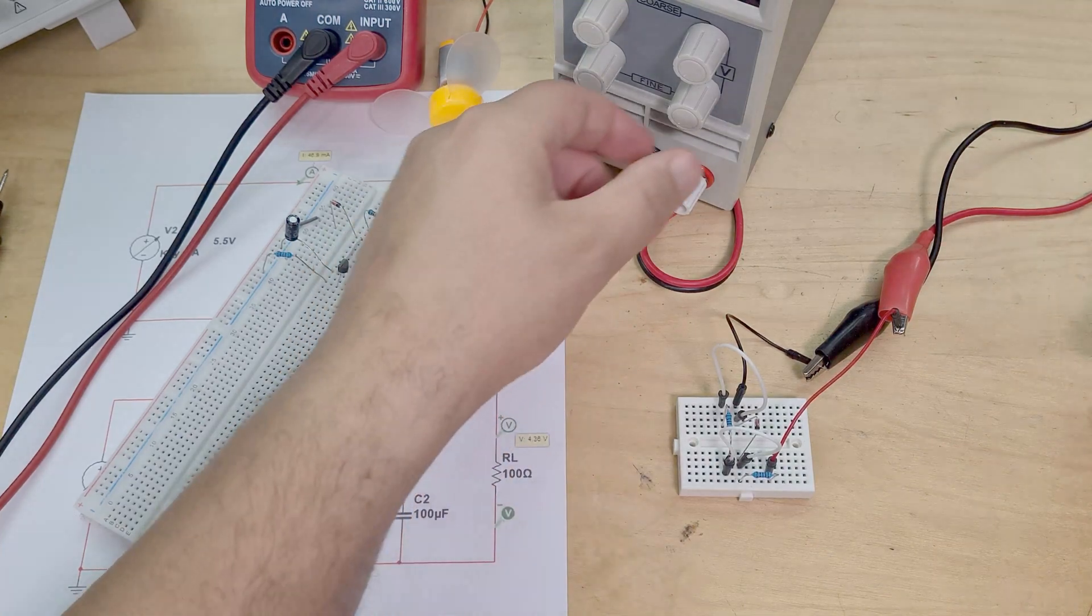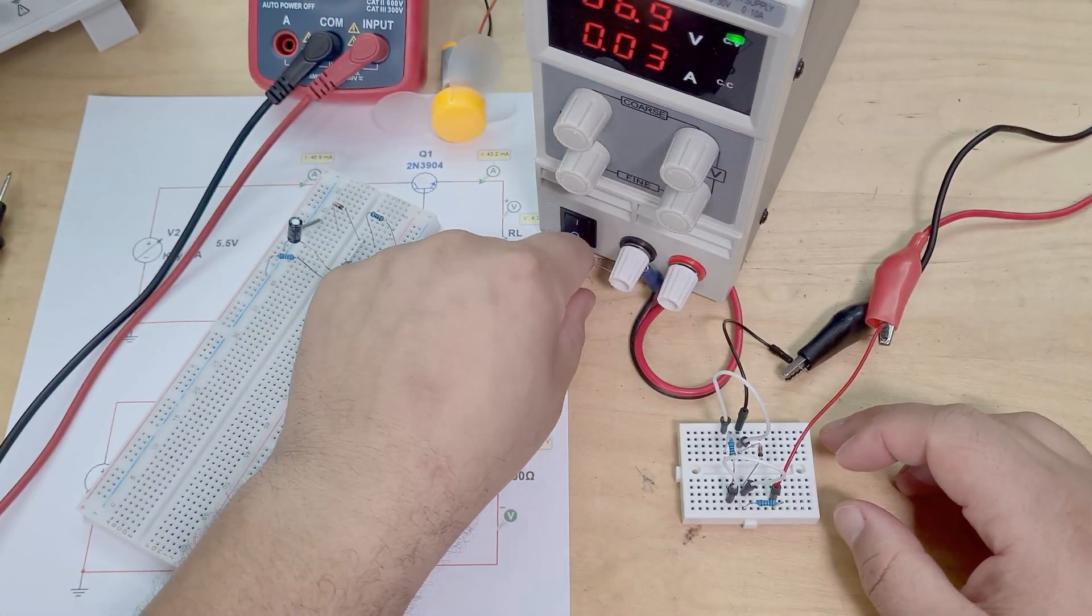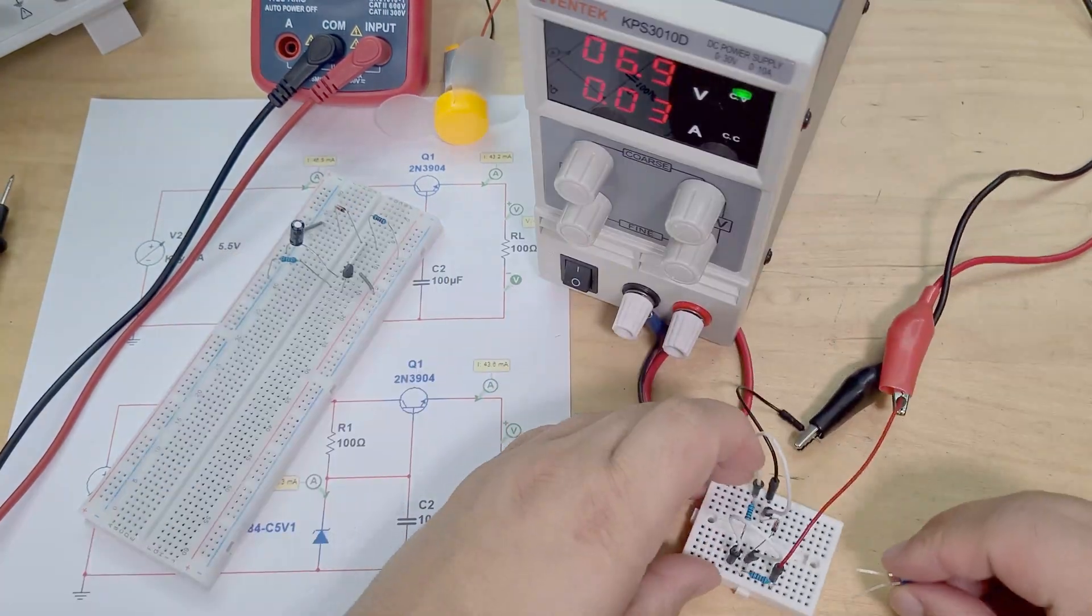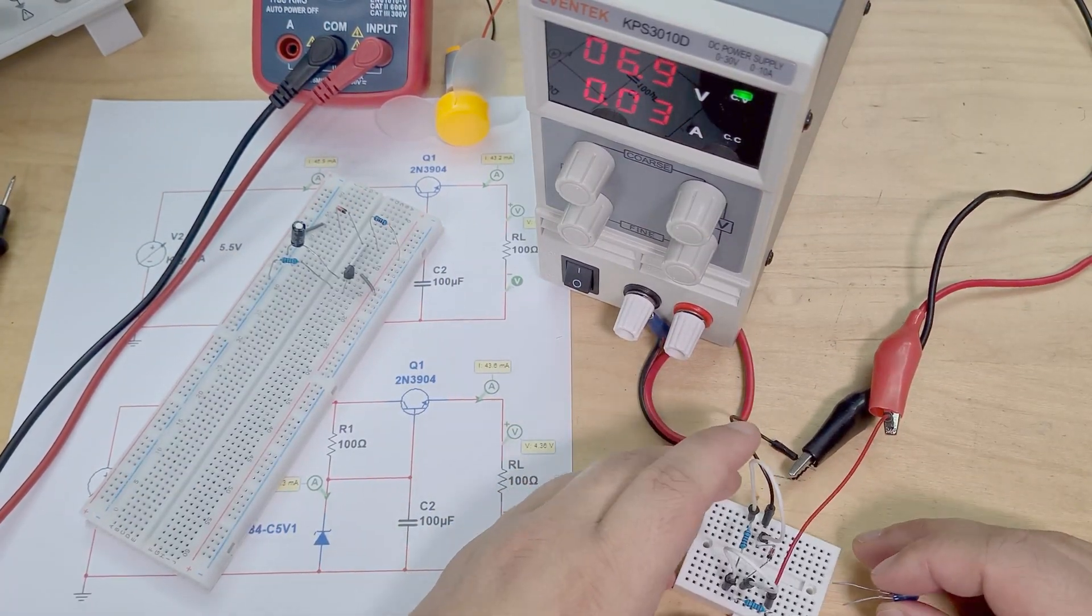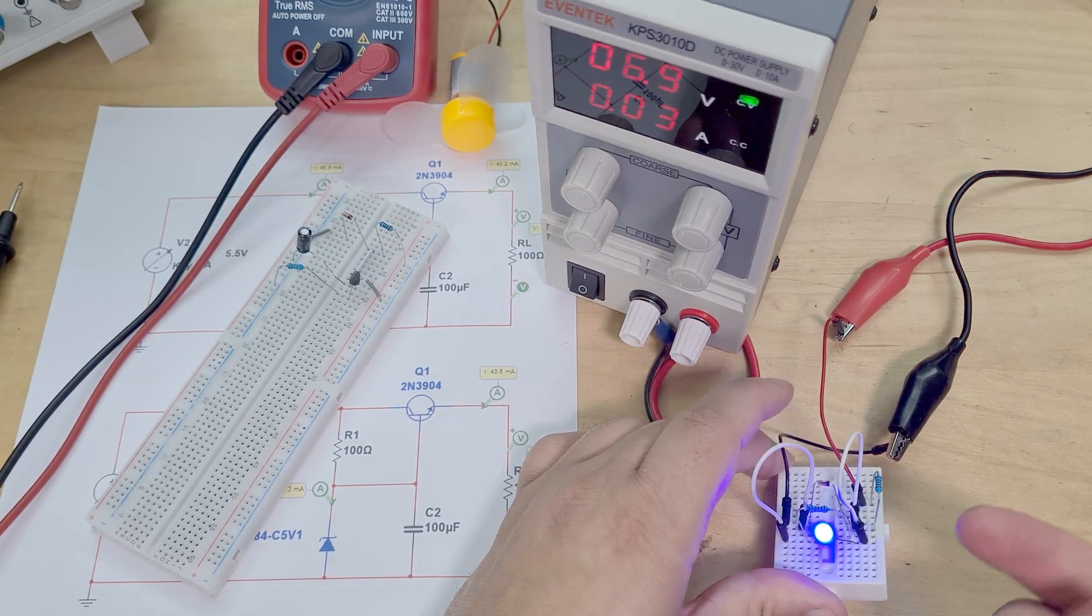So this circuit here, for example, if I take my voltage supply here and set it to 6.8 volts, this circuit at V out will light an LED as you can see there. So 6.9 volts lights the LED there.